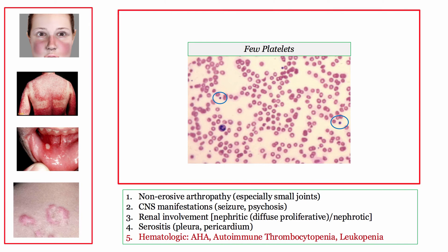Hematologic involvement is a big-ticket item, especially autoimmune thrombocytopenia. This is the one hematologic manifestation of lupus you are likely to see alone or in combination with the antiphospholipid antibody syndrome.